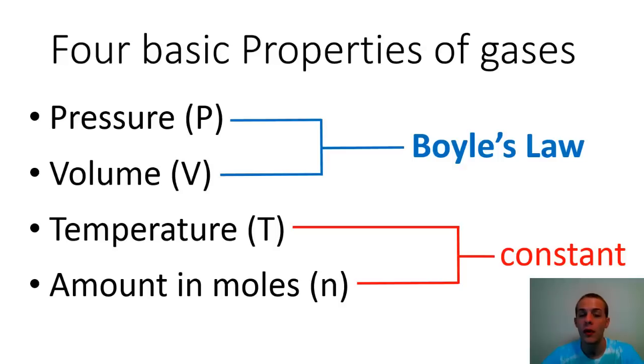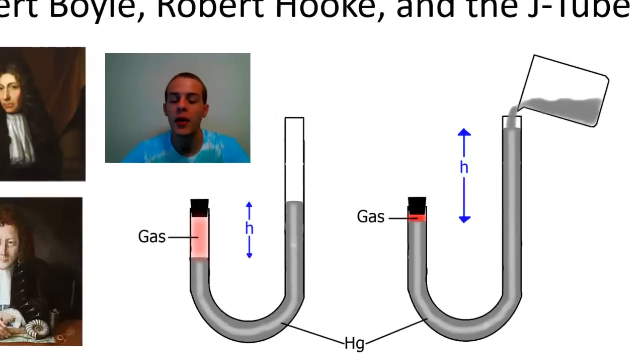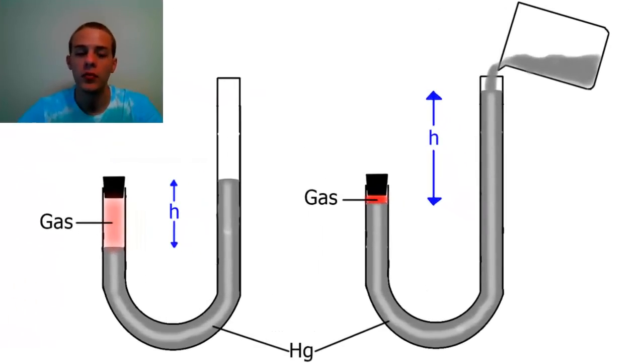So the way that Robert Boyle determined this behavior between pressure and volume, with his assistant Robert Hooke, they used this device here called the J-tube. And so using this J-shaped glass tube, they were able to trap a gas inside this tube. So one end of the tube is stoppered, and we have a gas that's trapped in by this mercury here. So the mercury is poured through this end, and that traps the gas in on this side of the tube.